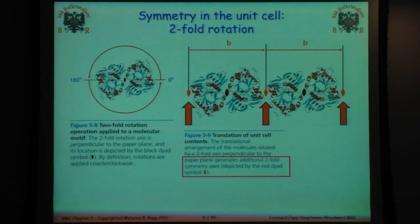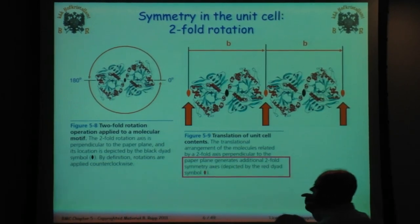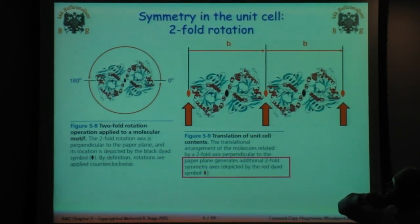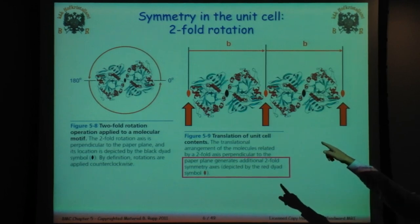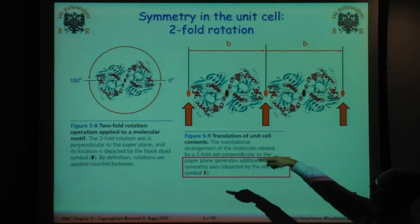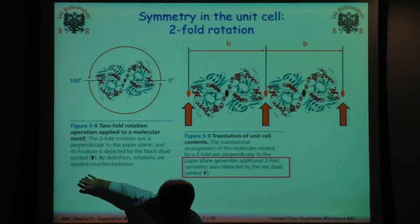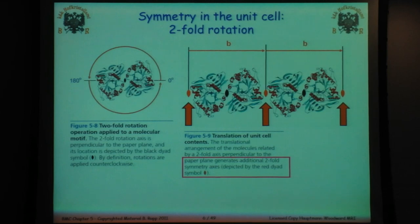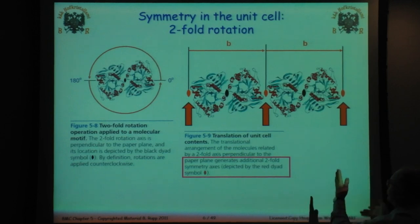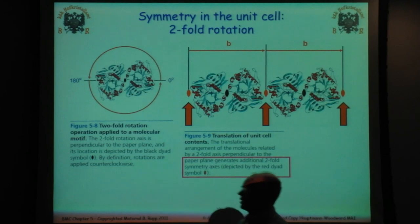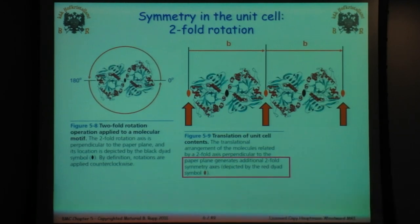Here's a particular case where we've got two-fold symmetry. These symbols are the same as they will be in the international tables. What we've got is a rotation of about 180 degrees, so it's two-fold — this protein is rotated 180 degrees. It's perpendicular to the paper plane, so it's a rotation around there. This is depicted by this symbol here, and by definition rotations are applied counterclockwise.